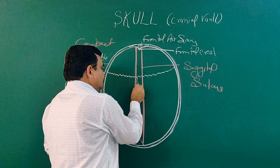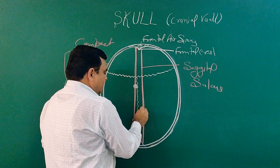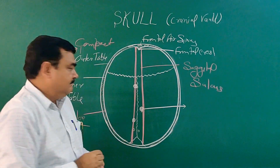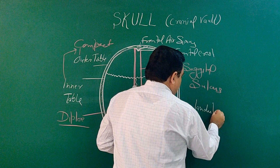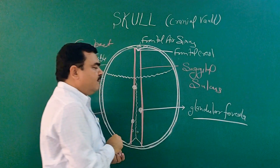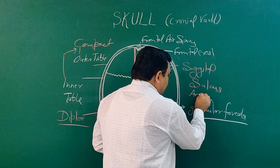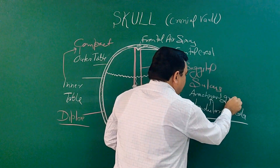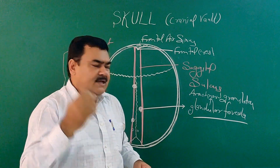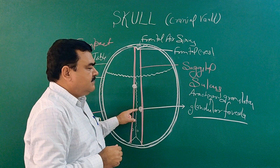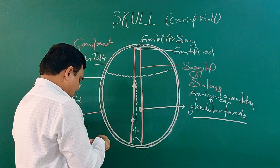In the sagittal sulcus you can see numerous depressions — these are the granular foveolae where arachnoid granulations are present. As age advances, meaning in old age, the number and size of these granular foveolae increases.